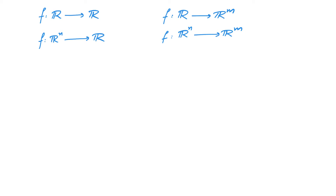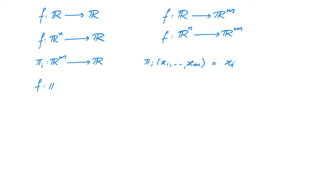Let us recall what we mean by component functions. We defined m functions from Rm to R, defined as πi of (x1, x2, x3, ..., xm) is equal to xi. So π1 takes (x1, x2, ..., xm) to x1, π2 takes it to x2, π3 takes it to x3, and so on. In this fashion, we obtain m functions. Given a function f from Rn to Rm, we can look at πi composed with f. This will be a function from Rn to R, and these functions will be called the component functions of f.